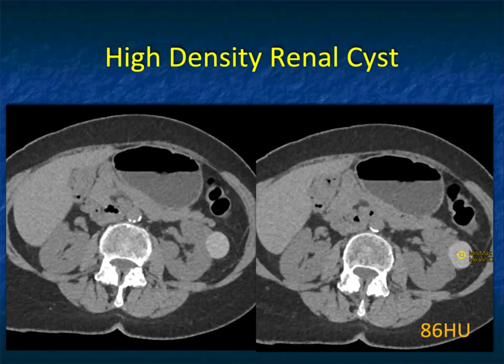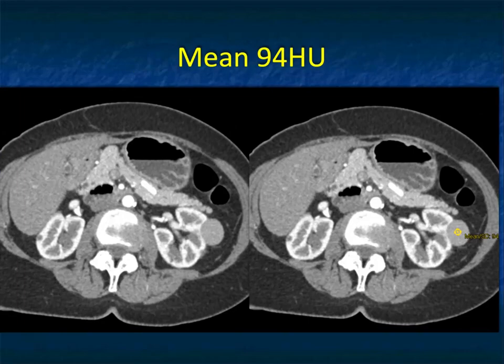One of the problems is a high-density renal cyst. If you look at this case, you see a mass in the left kidney. It was a non-contrast scan. The mass on the left kidney is well-defined at 86 Hounsfield units. If you gave IV contrast — this was not done specifically for the kidney — the attenuation of the lesion really doesn't change. It remains about 94, which is less than 10 change, so it's really not enhancing.